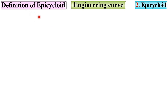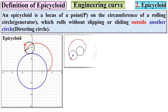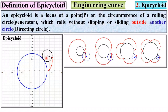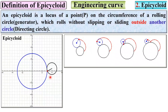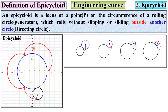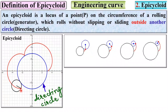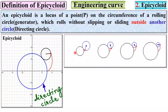Let us see first the definition of epicycloid. An epicycloid is a locus of a point P — here you can see the red color is point P — on the circumference of the rolling circle. This black circle is the rolling circle, sometimes known as the generator, which rolls without slipping or sliding outside of another circle. This blue circle is called the directing circle on which the rolling circle rolls. The red color curve is actually the epicycloid. If you vary the dimension of the directing circle with respect to the rolling circle, then you will get different types of epicycloid.